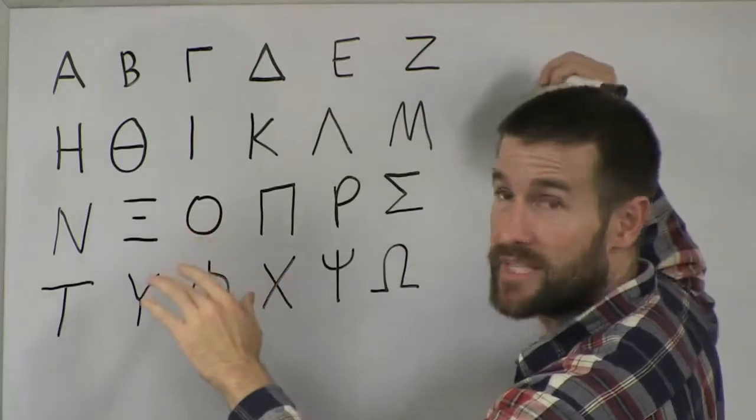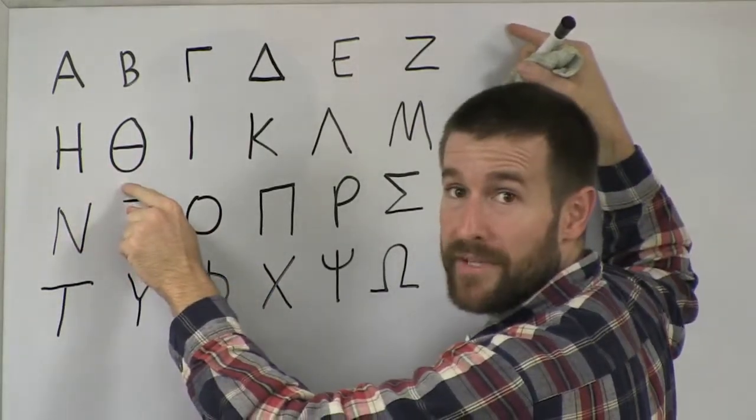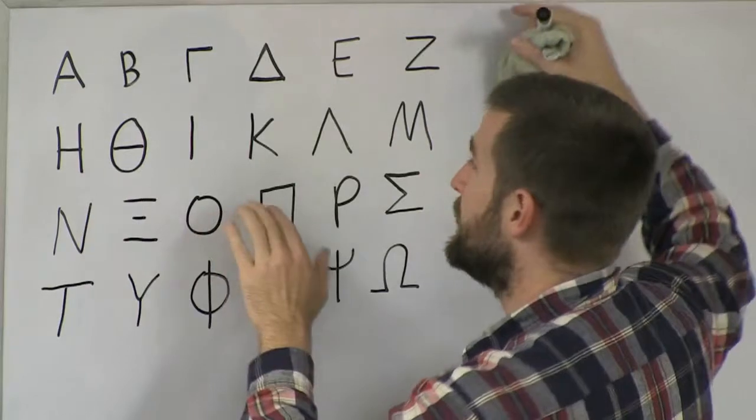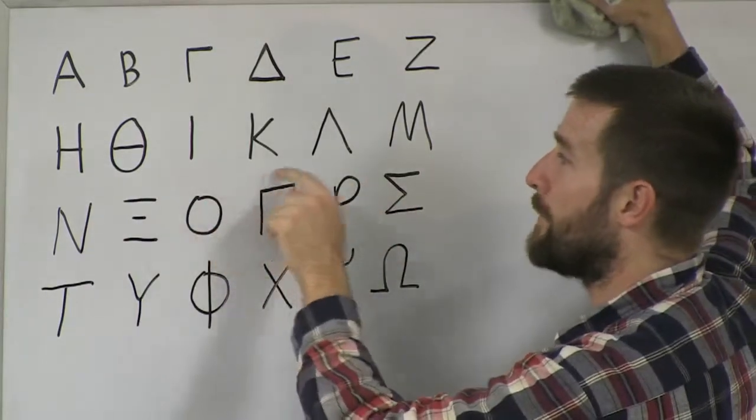Then the next three I group together. Zeta, Eta, Theta, because they rhyme. Zeta, Eta, Theta. Then the next three. Iota, Kappa, Lambda.